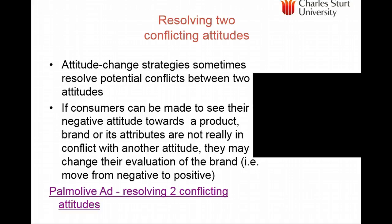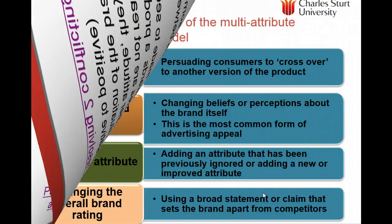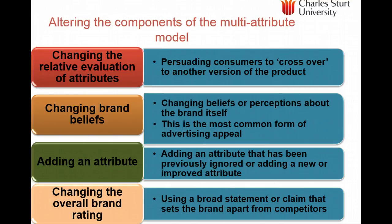'Gentle on your hands while it does dishes' — a very important way of resolving conflicting attitudes. Other ways using the multi-attribute model include changing beliefs about the brand, adding additional attributes such as stressing reliability and safety, or noting that a breakfast cereal is good for reducing cholesterol. We could also change the overall brand rating — sometimes done when motor vehicles win an award — or change the relative evaluations, such as moving consumers to a cheaper or more luxurious version of the product.